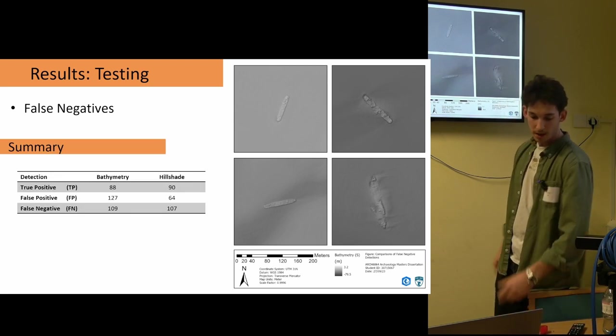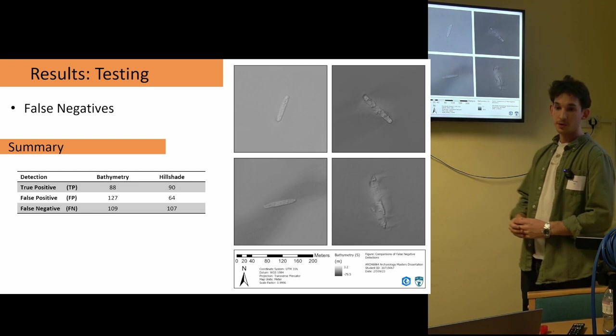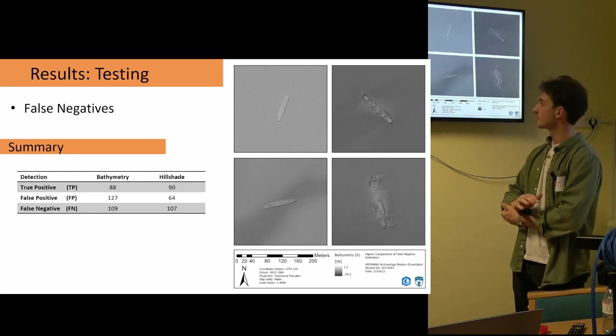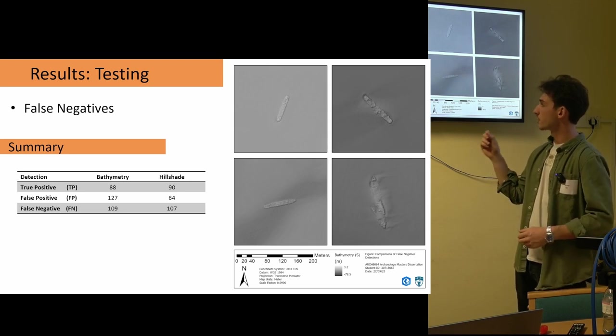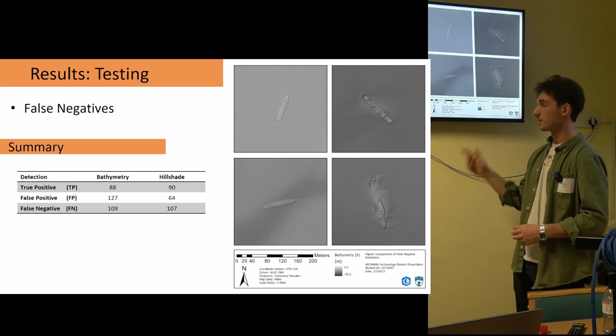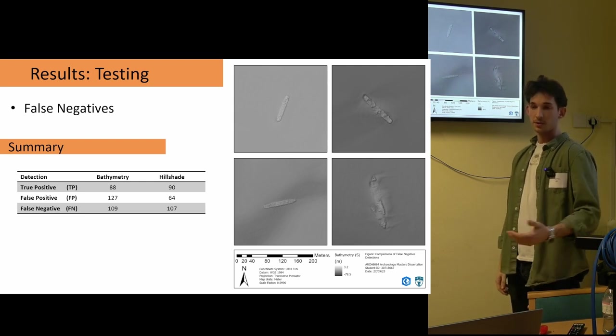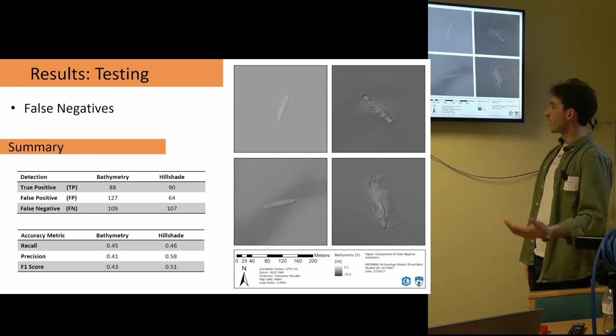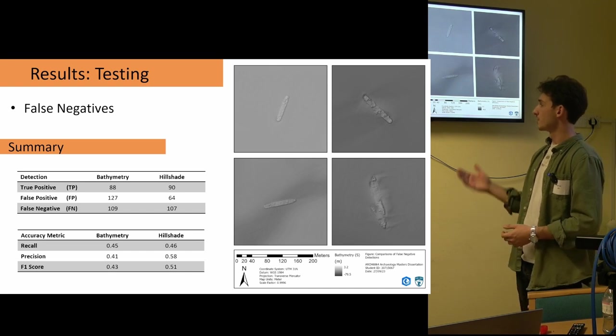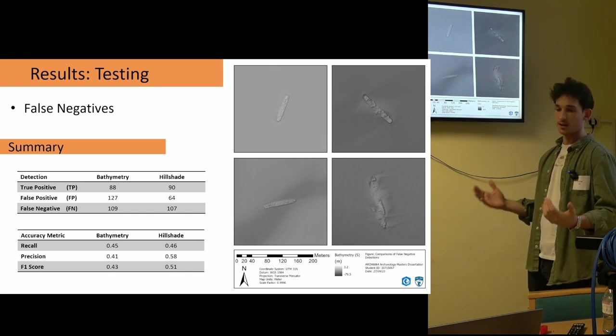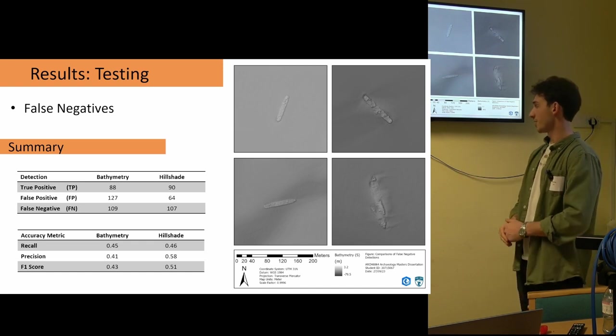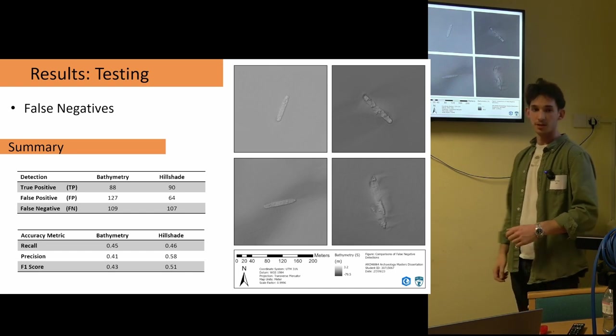Putting some numbers to that then, overall bathymetry models, the bathymetry and the hillshade model was able to detect roughly the same amount of wrecks. That's the true positive. The big difference is looking at the precision of that detection, and that's where we look at the false positives. So the hillshade is about 50% more precise in its detection than the bathymetry. From those numbers, we can calculate further standard accuracy measurements to further evaluate it. So overall, the recall is the number of detections out of the total in the study area. So it's not great, about 45% for both, but we see the big difference there in the precision using the hillshade.